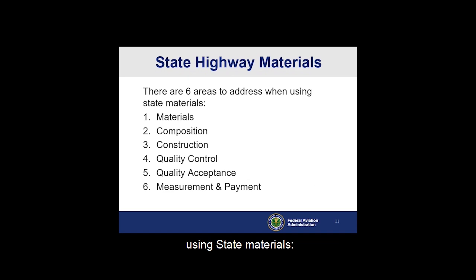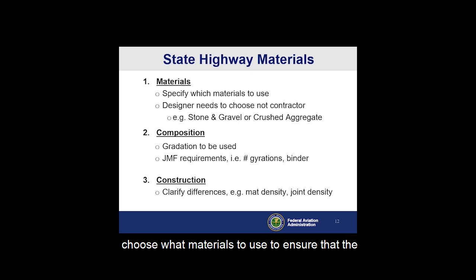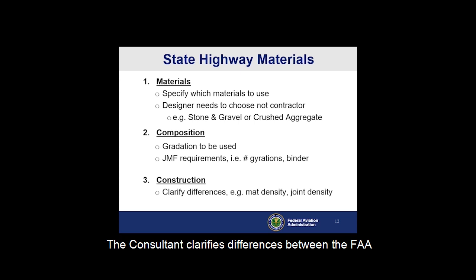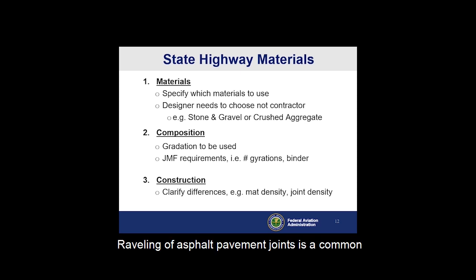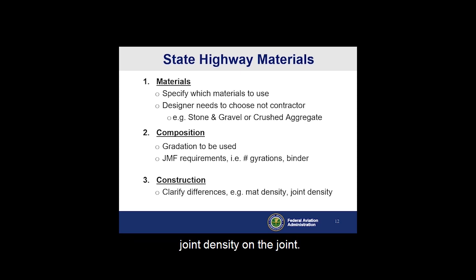There are six areas to address when using state specifications: materials, composition, construction, quality control, quality acceptance, and measurement and payment. For materials and composition, the consultant needs to choose what materials to use to ensure the pavement will perform as designed — for example, which asphalt mix or which type of gradation of base rock. Do not leave it up to the contractor to choose. The consultant also clarifies differences between FAA and State DOT specifications for construction. Raveling in asphalt pavement joints is a common pavement distress which may create foreign object debris (FOD), which can impact the safe operation of aircraft. FAA specifications require additional controls for the construction of joints; it is rare for highway specifications to check joint density.